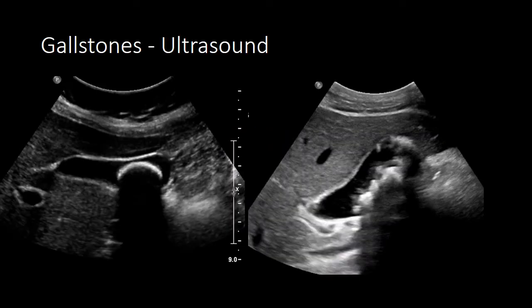Gallstones are commonly detected using ultrasound, which is a cheap and widely available screening modality with a high sensitivity for gallstones. When looking at the gallbladder with ultrasound, you will try to find an echogenic focus within the gallbladder which has posterior shadowing.